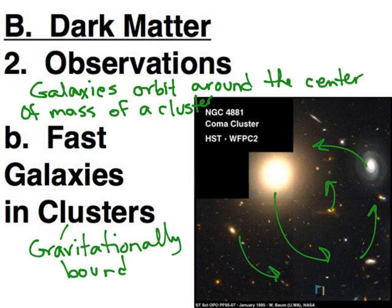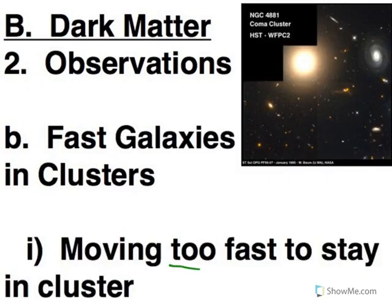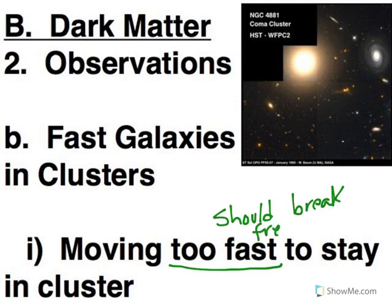But they're moving really fast. In fact, they're moving too fast. They should break free from the cluster, but they don't. So the only way you can have fast-moving galaxies stay in a cluster, not break free and go off on their own, is there needs to be more mass holding the cluster together.